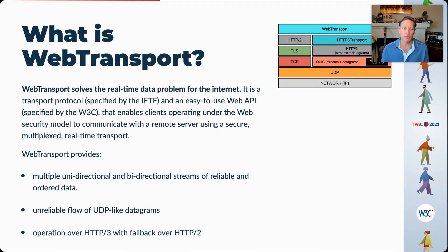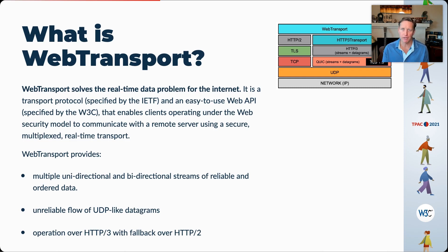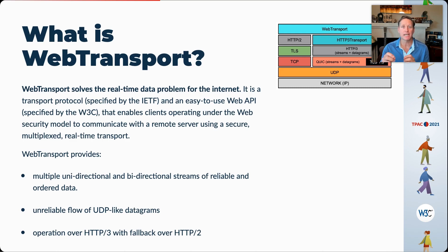The aspiration of Web Transport is to address the real-time data problem for the internet. Web Transport is a transport protocol specified by the IETF, and a Web API specified at the W3C, that enables clients operating under the web security model to communicate with a remote server using a secure multiplexed real-time transport. Web Transport out of the box gives you multiple unidirectional and bidirectional streams of reliable in-order data, as well as an unreliable flow of UDP-like datagrams. These datagrams differ from UDP in that they're encrypted and subject to congestion control, but carry data payloads of approximately the same size. Web Transport is designed to operate over HTTP/3 with a fallback to HTTP/2.